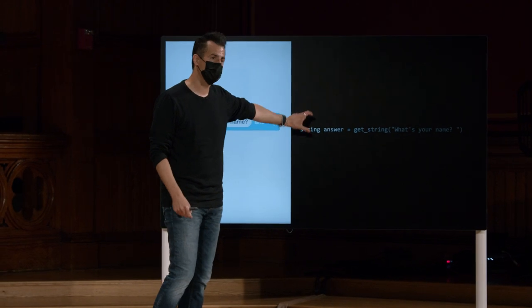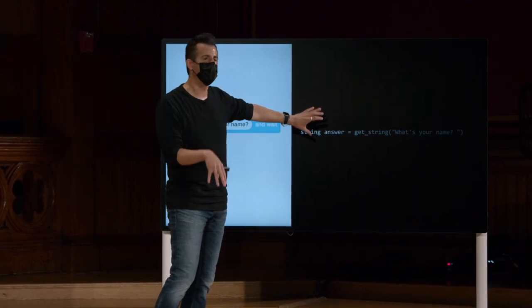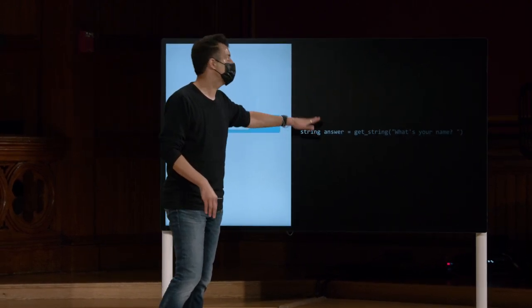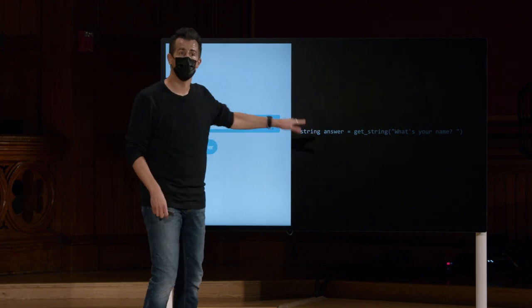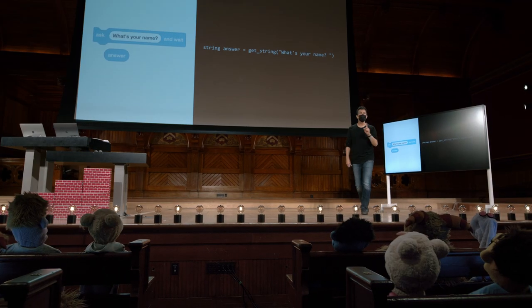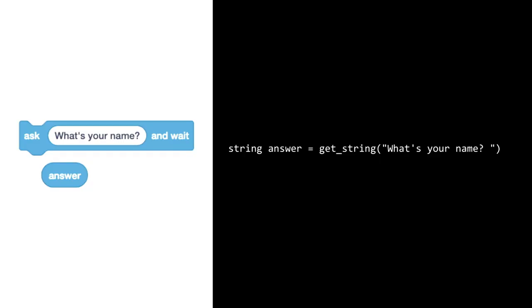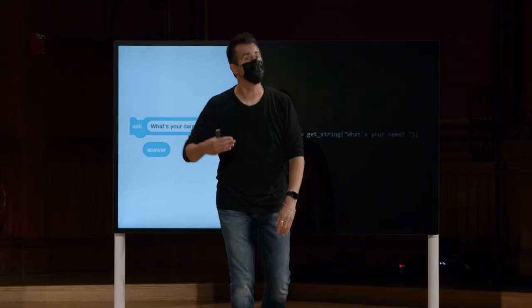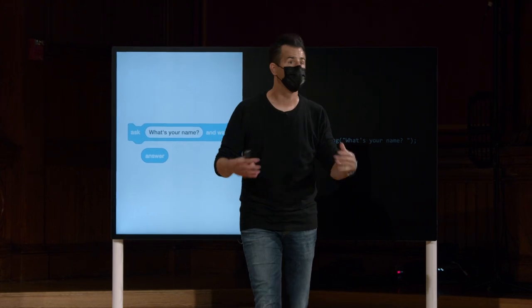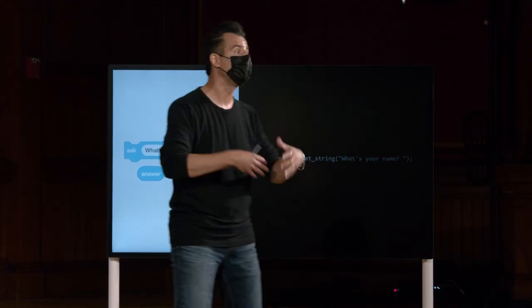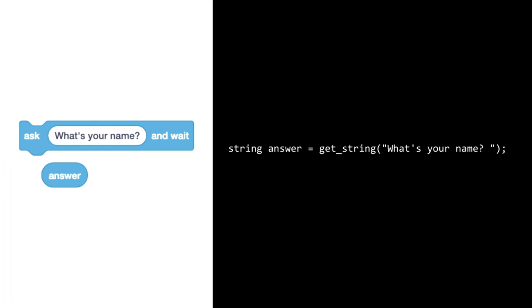Ao contrário do Scratch, que meio que descobre o que você quer dizer, com C e em muitas linguagens, você tem que ser pedante e dizer o que você quer dizer. Ainda há uma coisa faltando no código. O que ainda falta? Ainda precisamos do ponto e vírgula. Esses são os tipos de erros que você vai cometer hoje, amanhã, neste fim de semana, na próxima semana, até que você comece a notar e reconhecer isso, assim como em inglês ou qualquer que seja a sua língua falada.